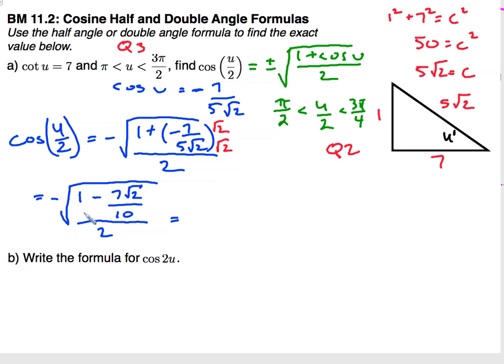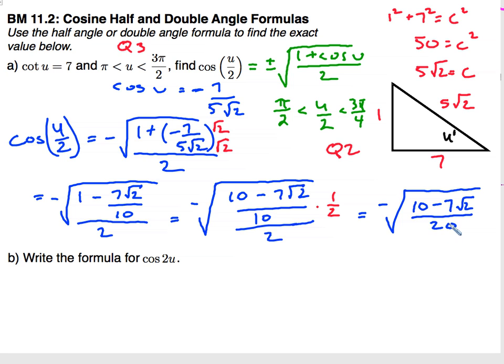Alright, I'll get a common denominator on the top, so I have the square root of 10 minus 7 square root of 2, all over 2, oops, excuse me, all over 10. And then that's over 2. So I get negative square root of 10 minus 7 square root of 2, all over 20. And that is my answer.